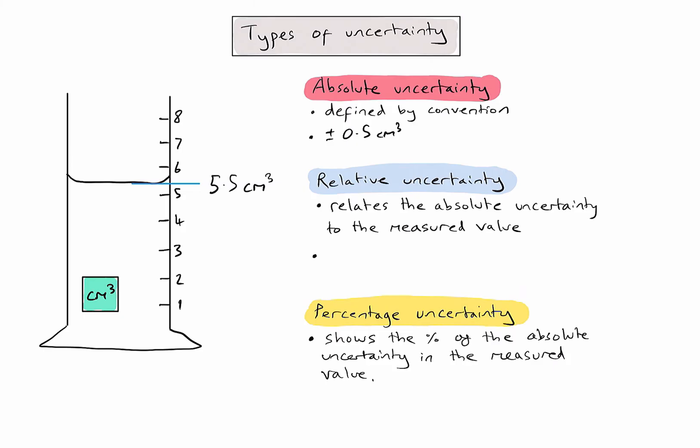Notice that my absolute uncertainty has the same units as the measurement I've made. In order to calculate the relative uncertainty, I'm simply comparing my absolute uncertainty to the measured value. Again, the units will cancel out, and I get a value in my calculator of 0.0909.